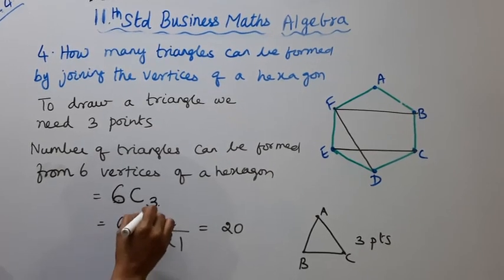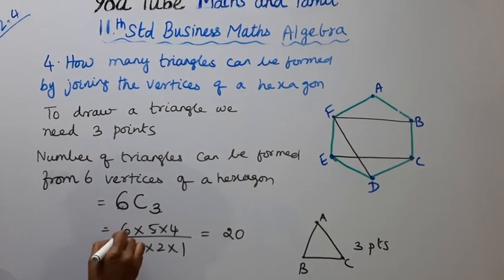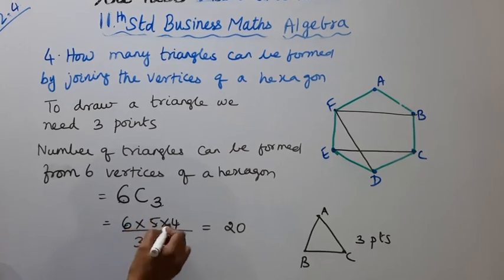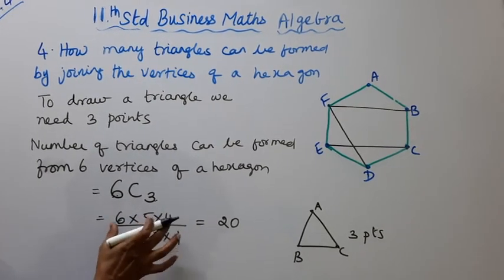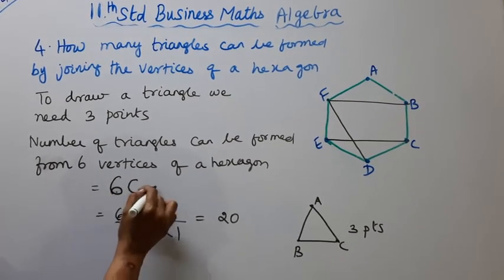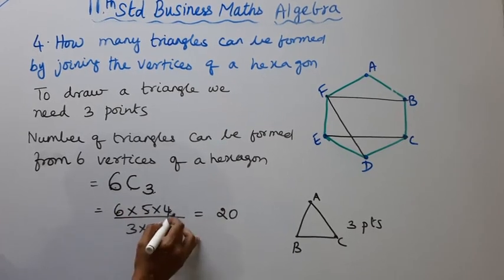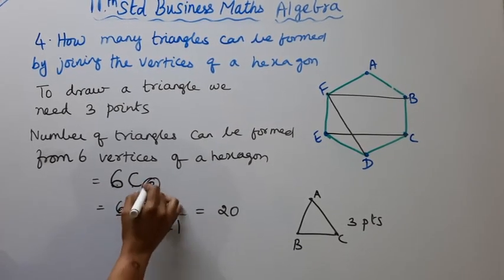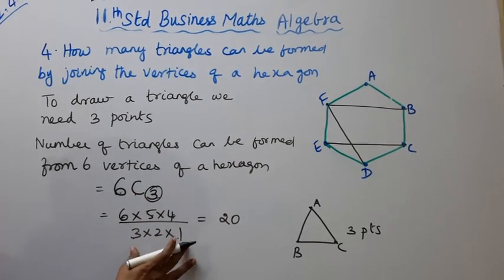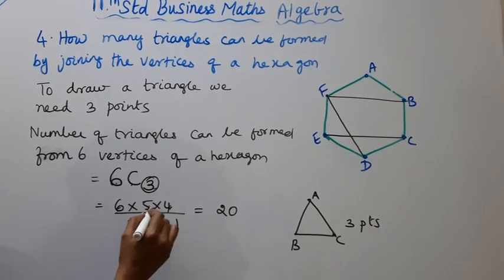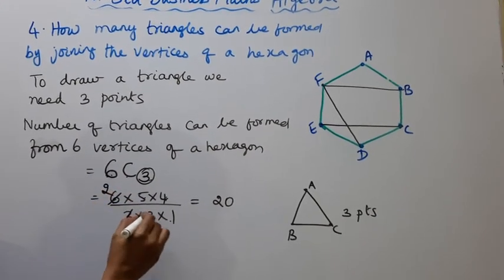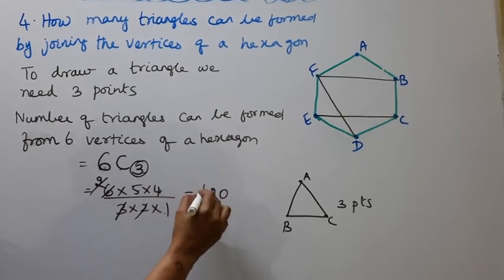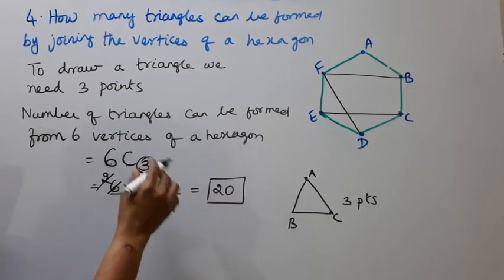6C3 equals 6 times 5 times 4 divided by 3 times 2 times 1. Simplifying: 6 times 5 times 4 over 3 times 2 times 1. After canceling, we get 20. This is the answer.